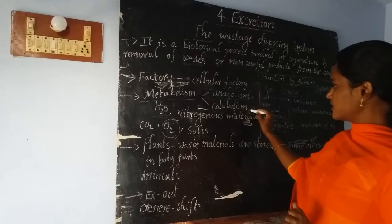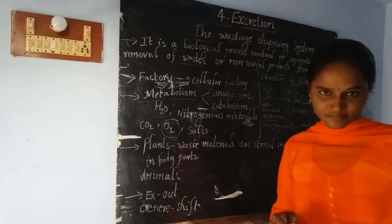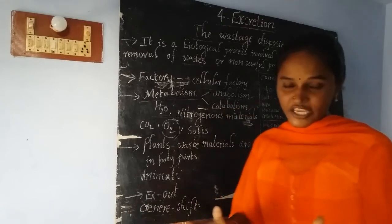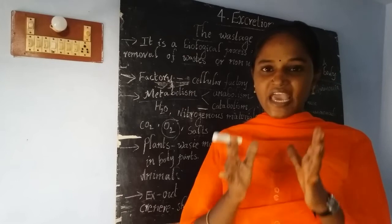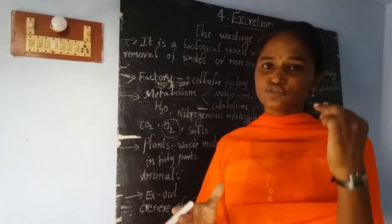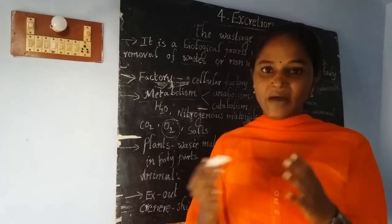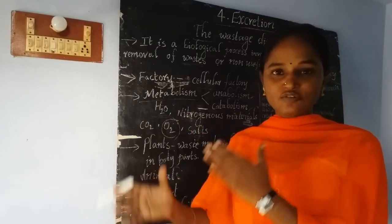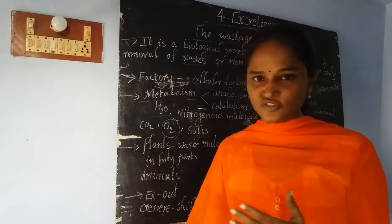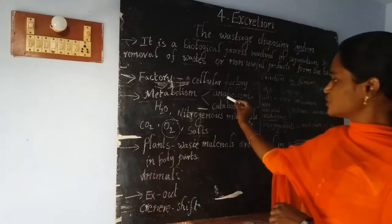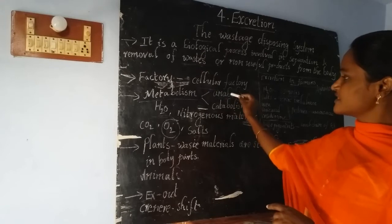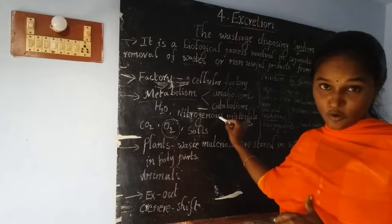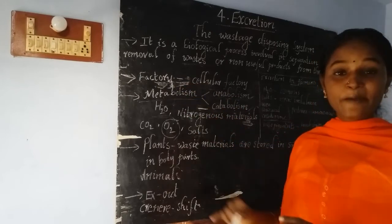Catabolism is completely opposite to anabolism. It is a breakdown process — where a complex molecule is broken down into simple ones. Anabolism and catabolism together are called metabolism.